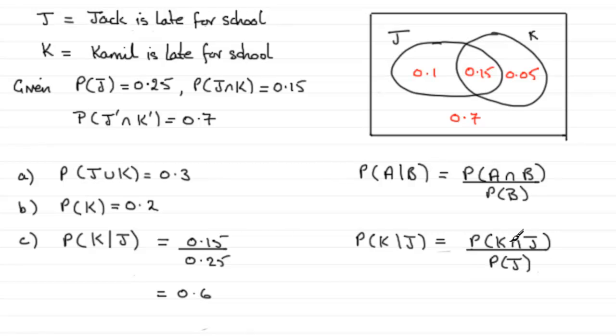And that's all I'm doing here. The probability of K intersected with J is the 0.15 and I'm comparing it with the probability of J. That is everything in there, which is 0.25. So do the sum then and you end up with 0.6.